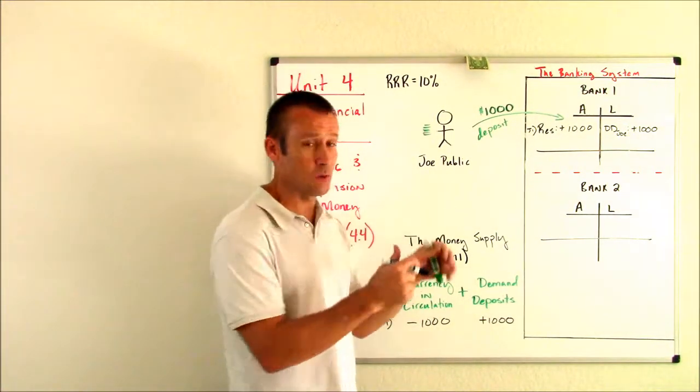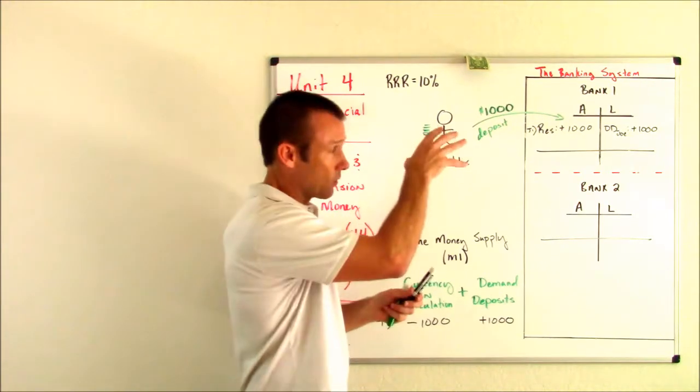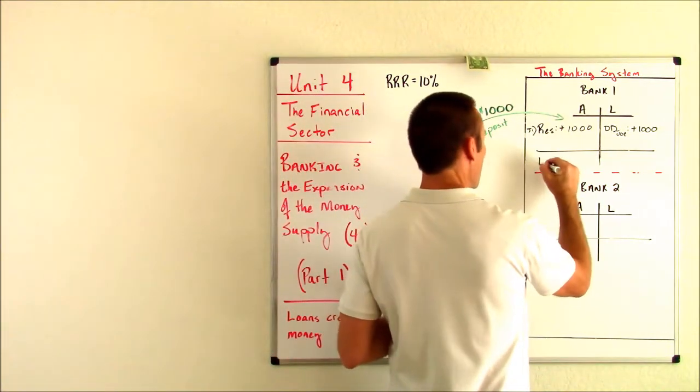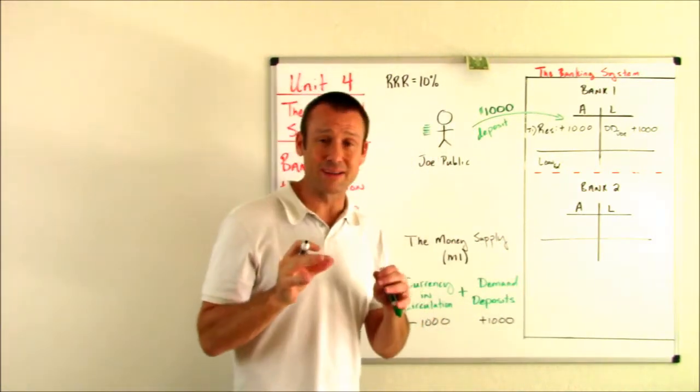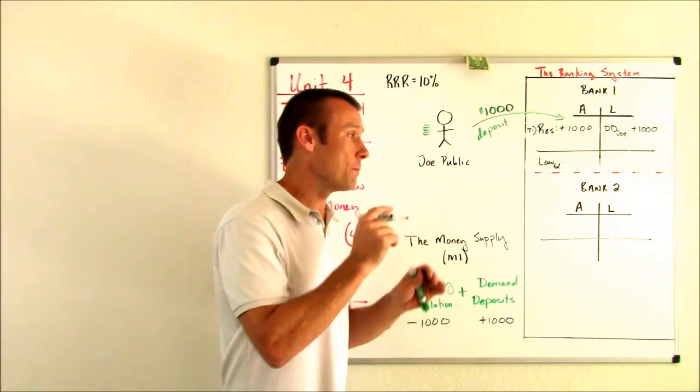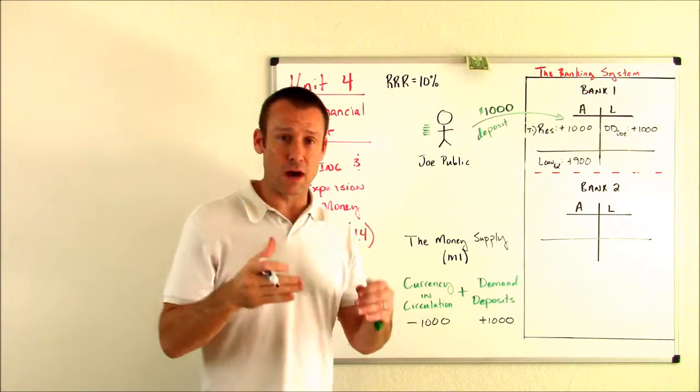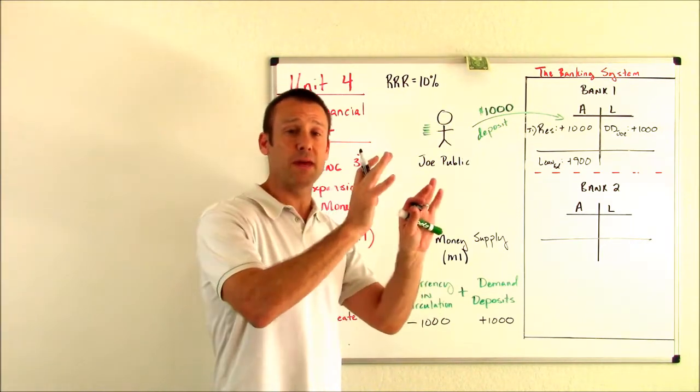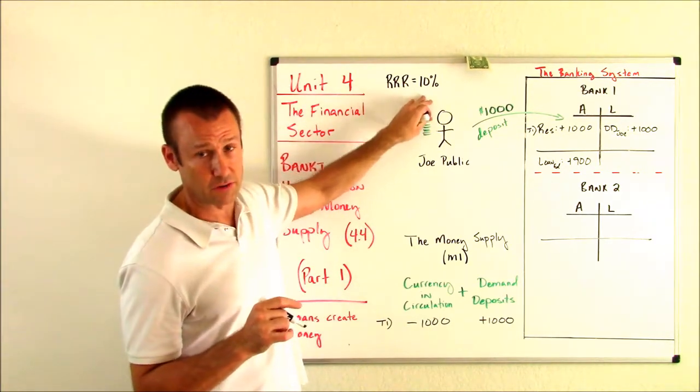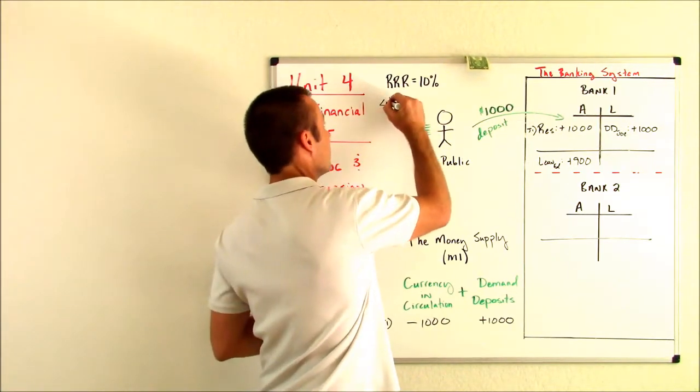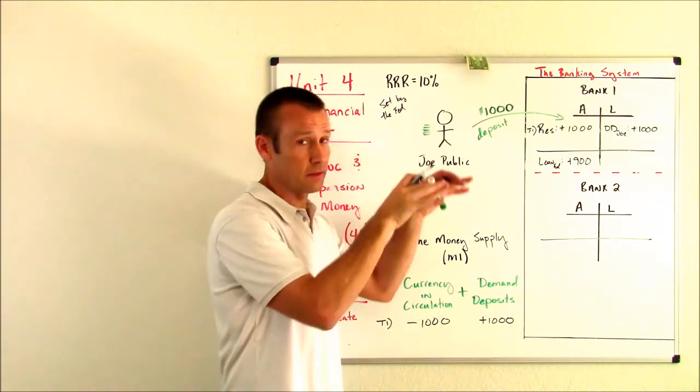So let's just say that Ed walks into bank one and Ed needs a loan. He says, I need a loan for $900. So we go to bank one's balance sheet and I'm going to write the loan on the asset side. Loan Ed. Why is that an asset to bank one? Because this is something that Ed is now going to owe bank one, plus $900. And he's taking out a loan for $900. We're saying that bank one's going to loan out the maximum they can from the deposit, which is $900. They can't loan out $1,000 because of this required reserve ratio, which by the way is set by the Fed.